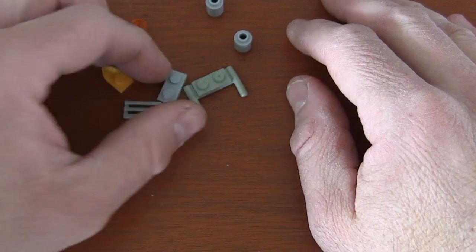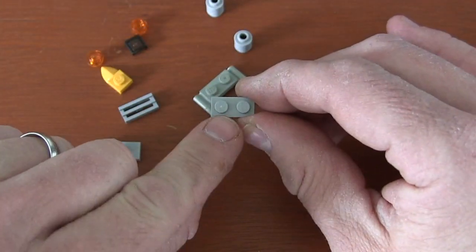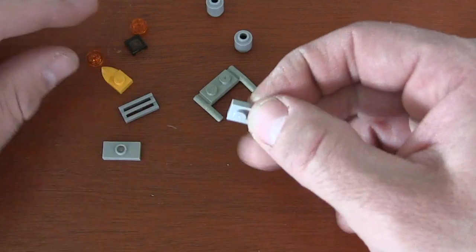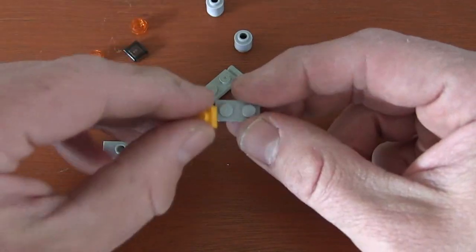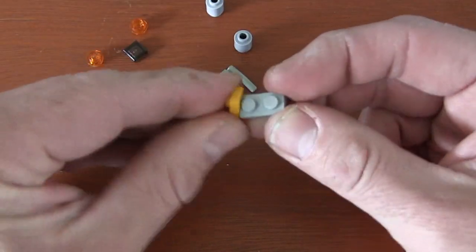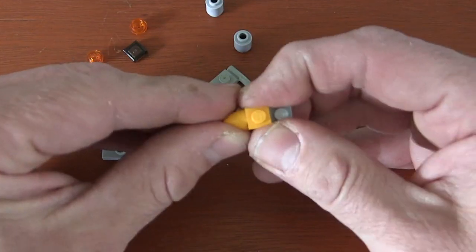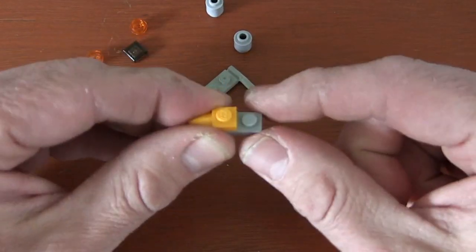The first thing I do is grab a 1x2 plate and this stud right here will be the front of our Y-Wing. I'm gonna grab a tooth plate and put it right here in the front over that stud, and I'm choosing yellow or gold to represent Gold Squadron in the first run on the Death Star.